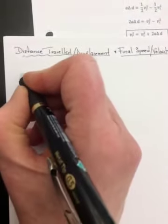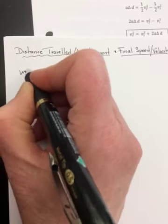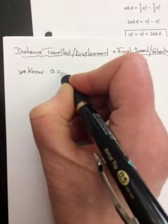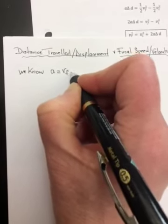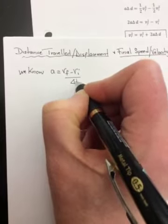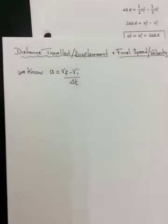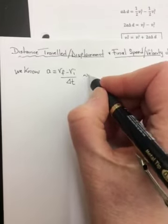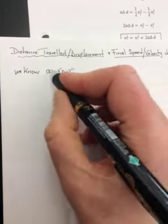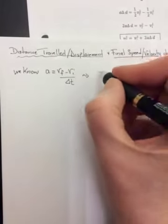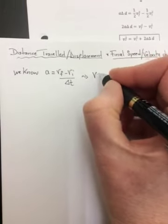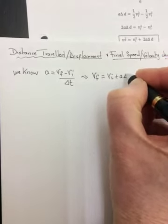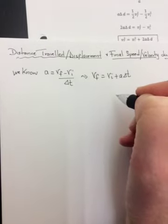So what are the equations we already know? Well, we know from perhaps grade 10 science or earlier this semester, we know the equation a is equal to VF minus VI over delta T. Acceleration is equal to final velocity minus initial velocity over the time. And we can rearrange this for final velocity by multiplying by the delta T and taking the VI over. So it will become VF is equal to VI plus a delta T if we rearrange it.